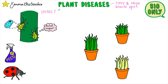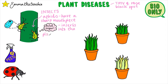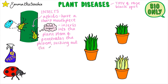The first is by insects, in particular aphids. Aphids are small green insects that have a sharp mouthpiece. They insert this into the plant stem and penetrate the phloem vessel, sucking the sap out of it. This deprives the plant of the sugar it made during photosynthesis, which damages the plant and reduces its growth.